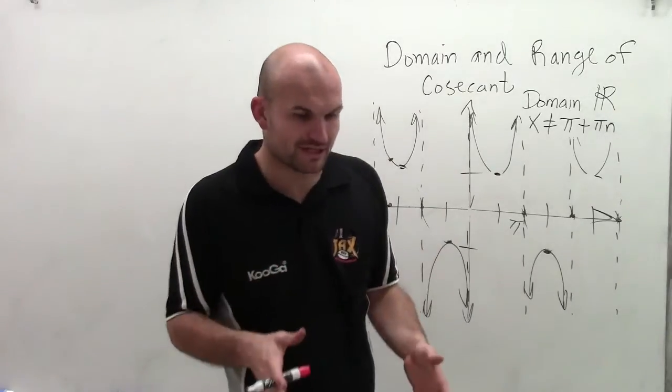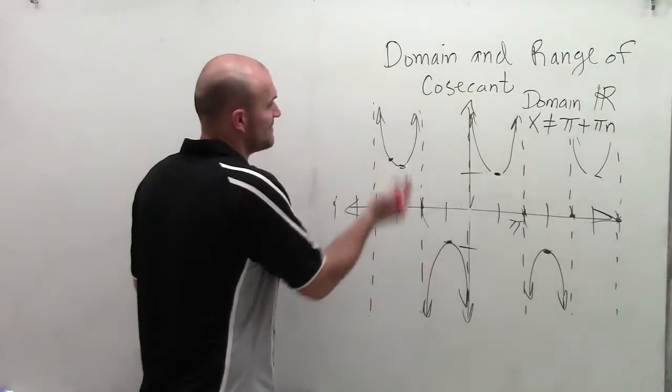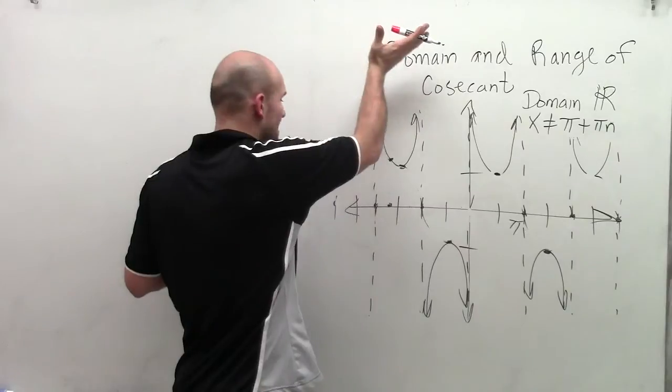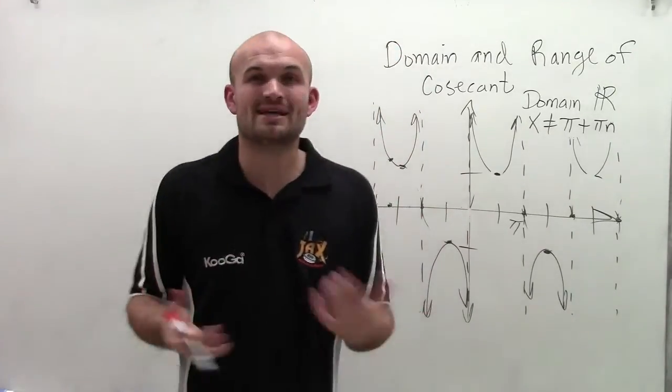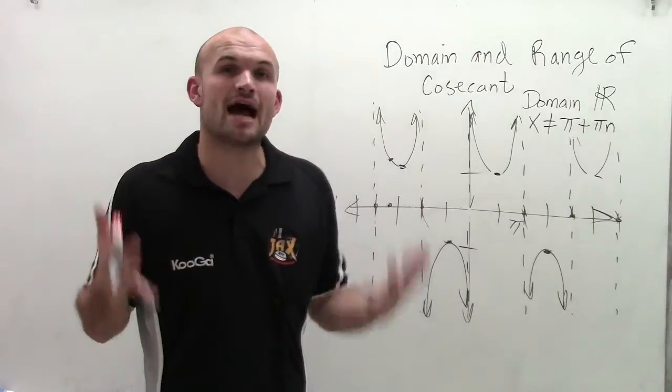So that's going to be dealing with the domain. Now, when dealing with the range, now we're going to look at all of the y values. So we notice with this graph, this graph goes infinitely in the positive direction and infinitely down in the negative direction. But is there a point in my graph where I do not have an output value?